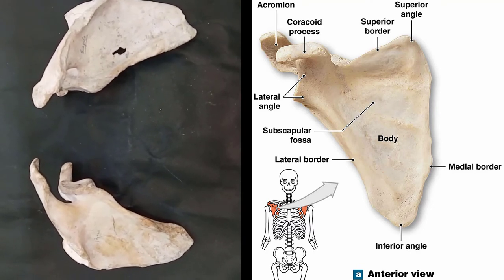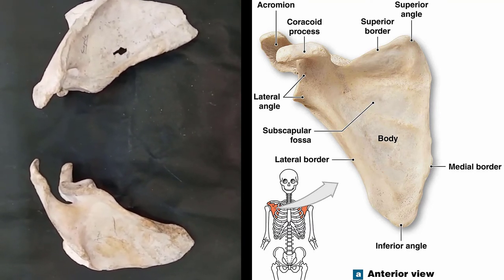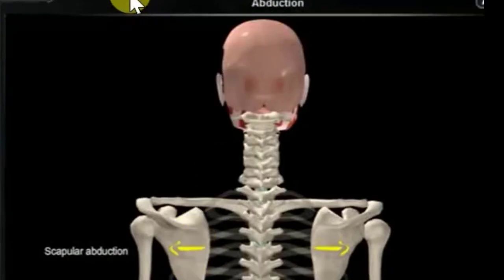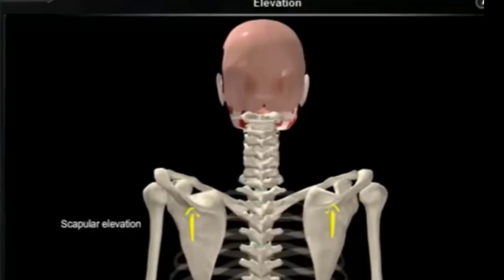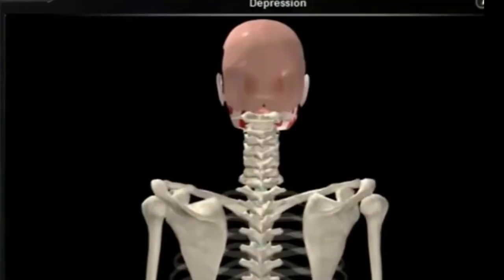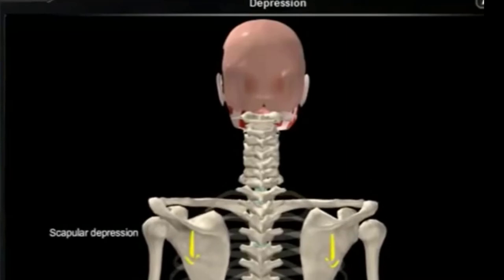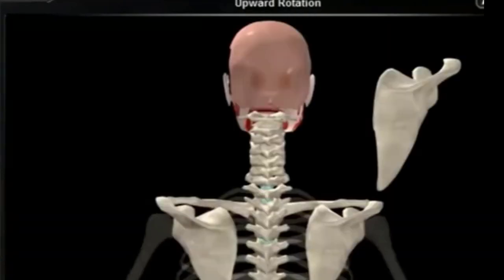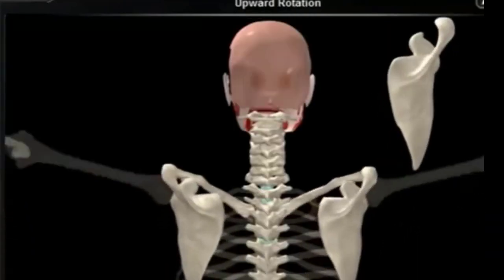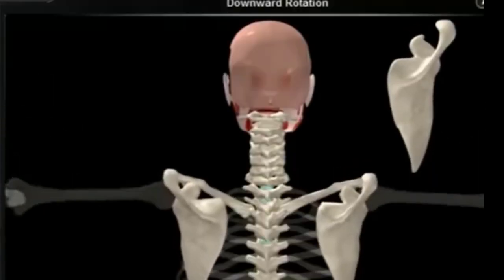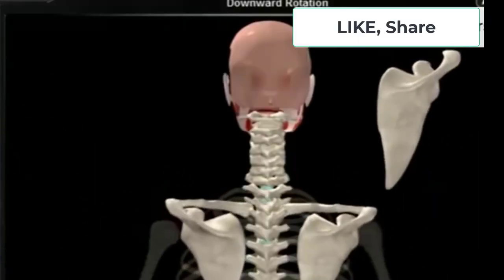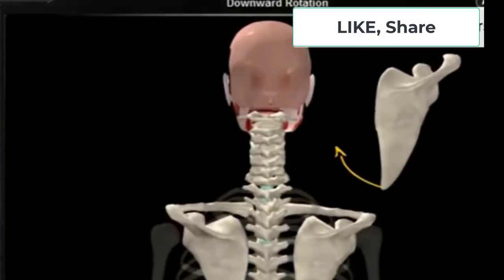The functions of the scapula bone — the scapula is important in the function of the shoulder joint. It engages in six types of motion which allow for full functional upper extremity movement, including protraction, retraction, elevation, depression, upward rotation, and downward rotation.